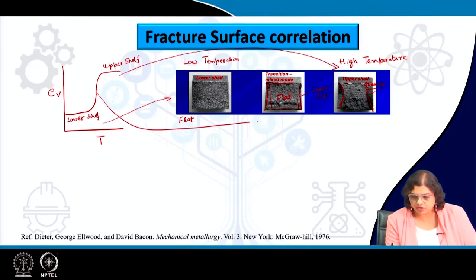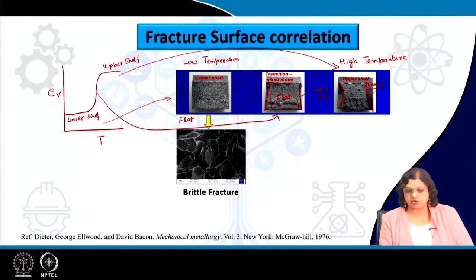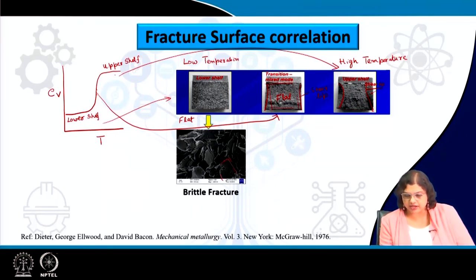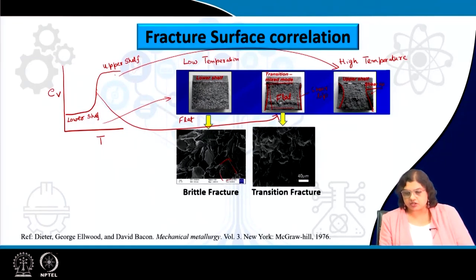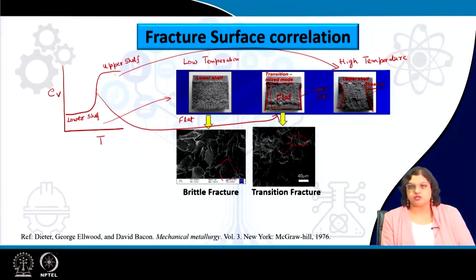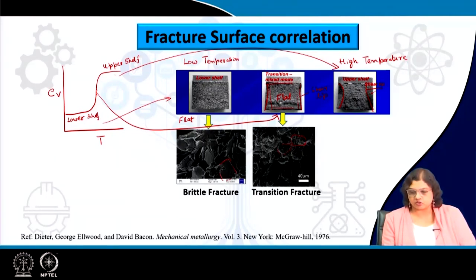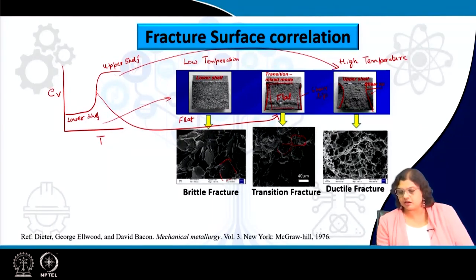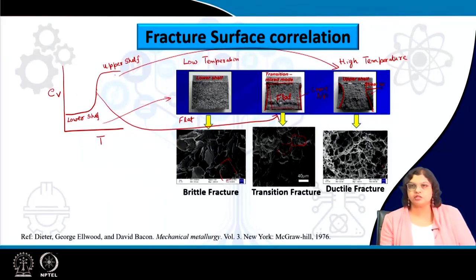At higher magnification, the brittle specimen shows completely flat facets with cleavage very well apparent. In the transition mode, some locations show dimples and other parts show some amount of cleavage. We can figure out what percentage of each is present based on microstructural analysis, determining whether there is complete ductile failure, complete brittle failure, or mixed mode fracture. The ductile fracture shows nicely formed dimples indicating micro void coalescence.